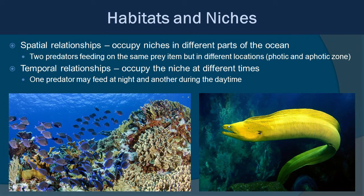You can also have special relationships where organisms occupy niches in different parts of the ocean — two predators feeding on the same prey but in different locations, latitudinally or by depth, such as in the photic zone versus the aphotic zone. There are also temporal relationships where organisms may occupy the same niche at different times. For example, the green moray is a nocturnal feeder — during the daytime you'll see them under ledges, while at night they swim around looking for food. Blue tangs, on the other hand, feed on algae in schools during the daytime to avoid predation at night.